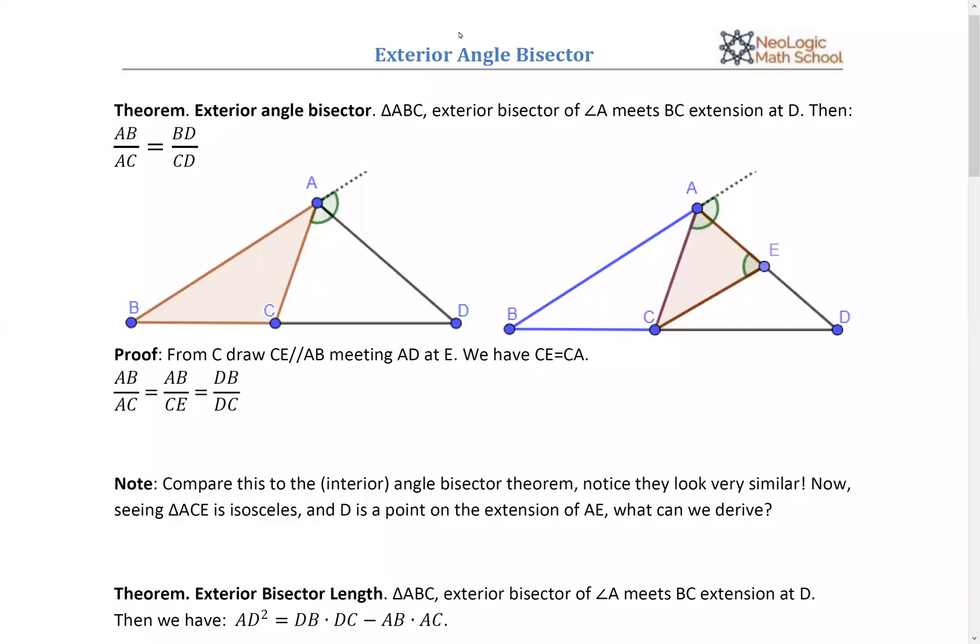All right, last time we talked about angle bisectors, the ratios, the way to calculate the bisector's length. Today we're going to talk about something called exterior angle bisector.